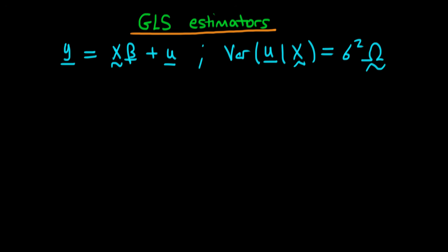What we're going to do here in GLS is we're going to actually transform our model using some transformation matrix which I'm going to call P. So we're going to multiply both sides of our system by this transformation matrix P, which as yet I haven't specified. Indeed, we're actually going to derive it in the course of the next few videos.